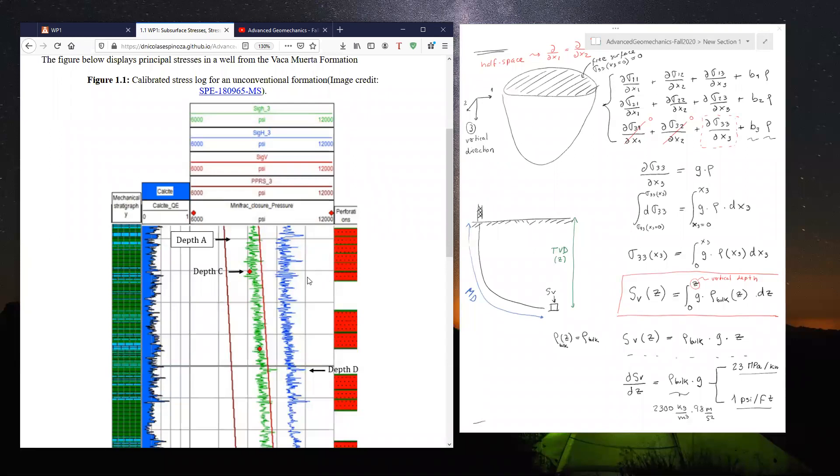and we can obtain the variation of these quantities with depth and also the absolute value. And later, what we're going to do—you're actually going to calculate the gradient, the actual gradient of vertical stress,